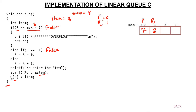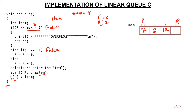Pressing 1 again: rear is 1, not equal to 3; front is not minus 1; so I increment rear to 2. User enters 12, so Q[2] gets 12. Pressing 1 once more: rear is 2, not equal to 3; front is not minus 1; increment rear to 3. User enters 15, so Q[3] gets 15. The queue now holds 7, 8, 12, and 15.